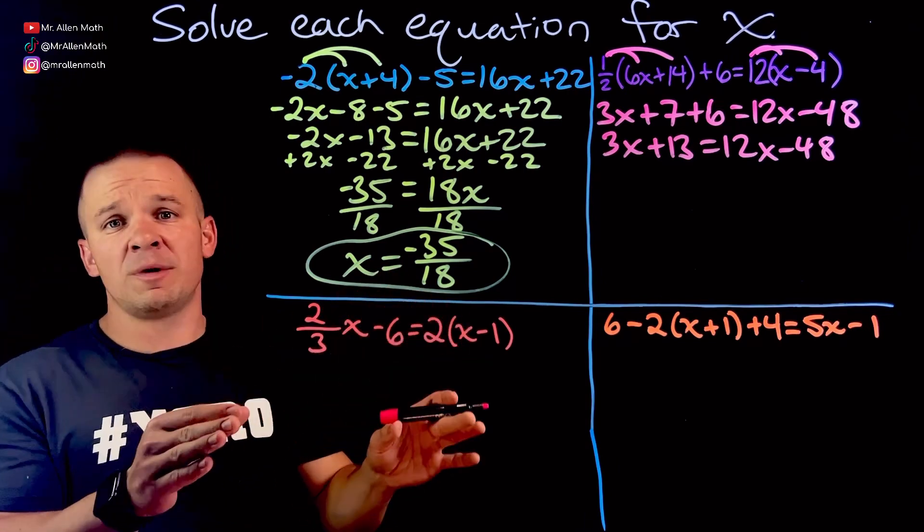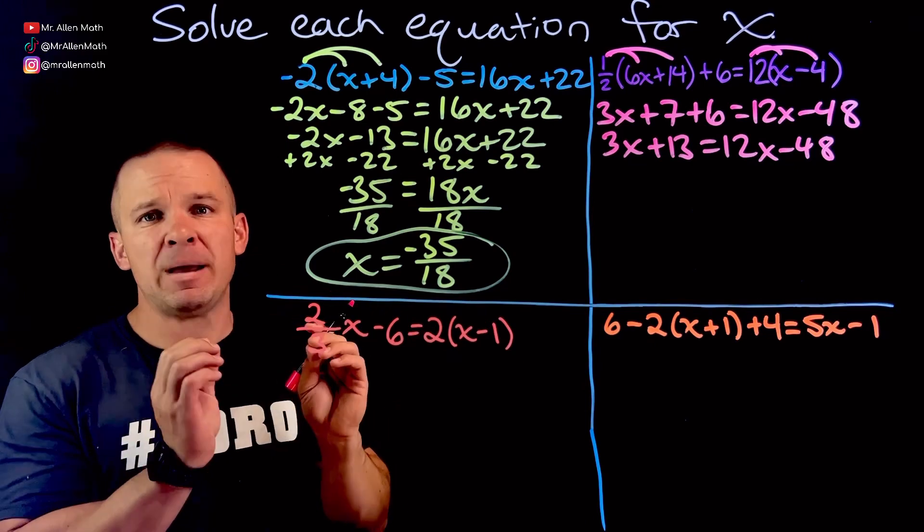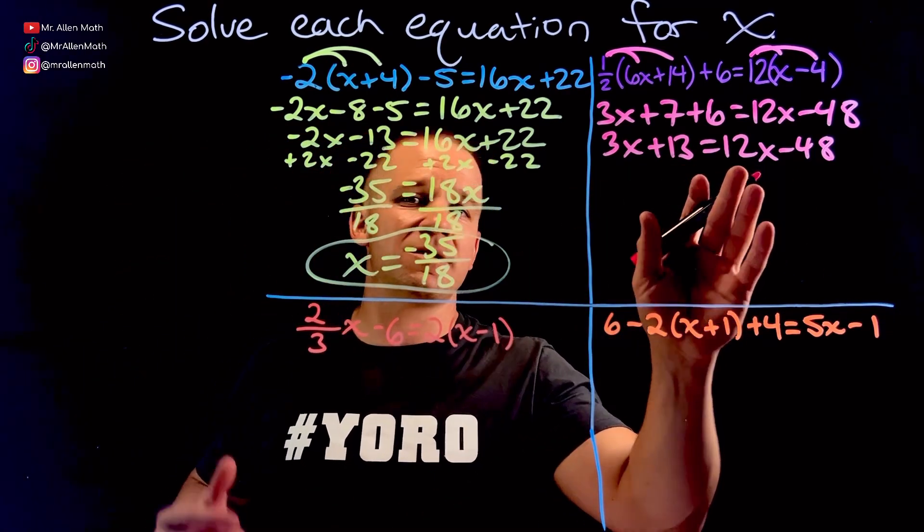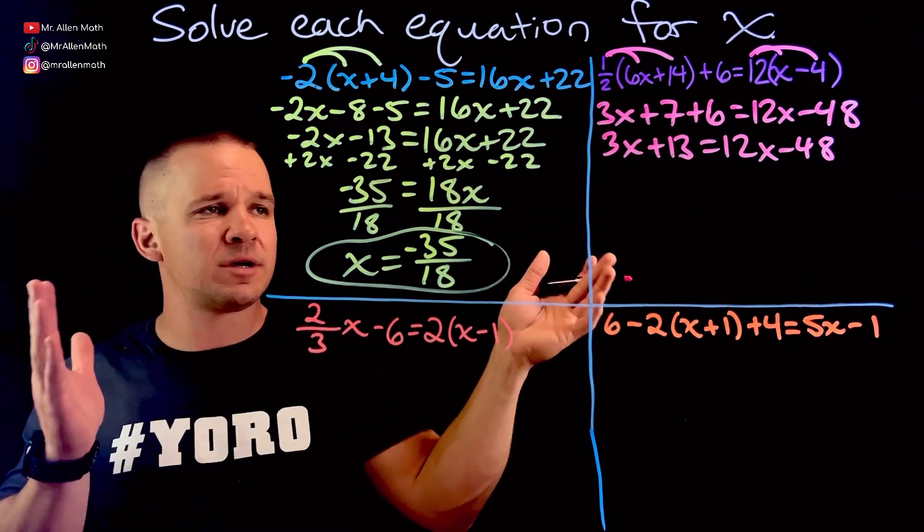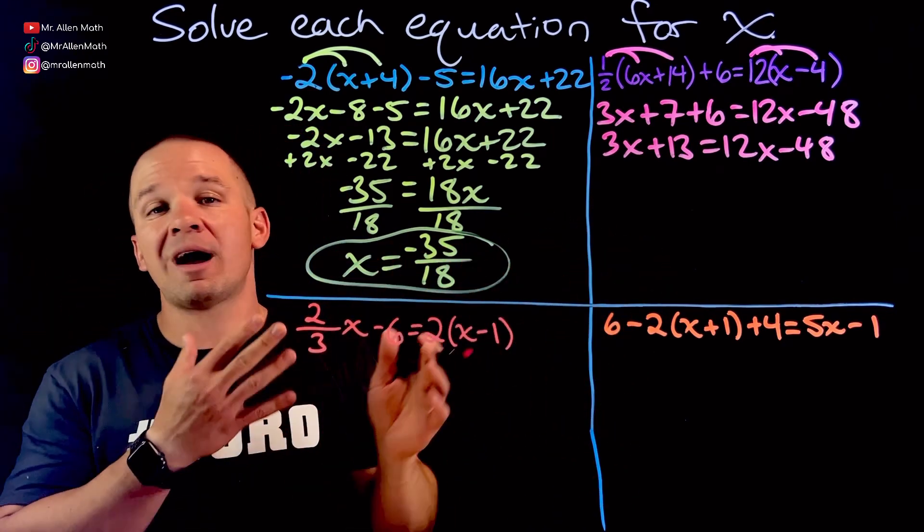So as always, I like to do any kind of distributing that needs to be done. I like to clean up each side. Then I start making big moves. So I'm going to actually get my x's to the right-hand side so the x's stay positive. That's just my preference. Some people will say, always go to the left. I like to make them positive.